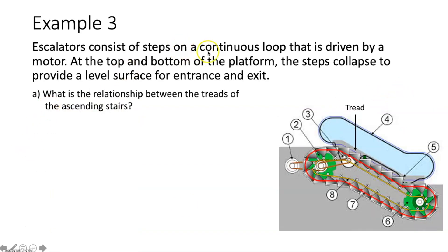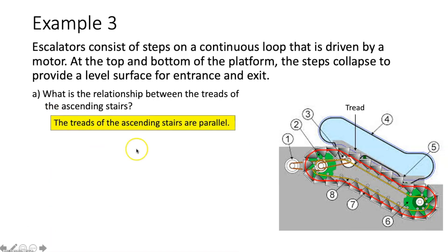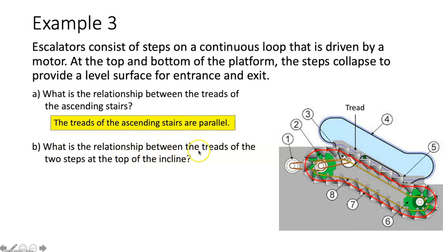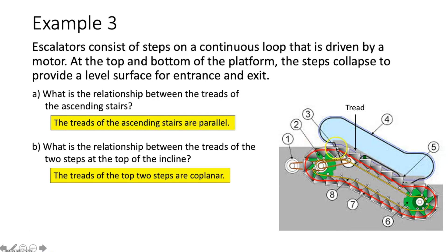Example three: escalators consist of steps on a continuous loop driven by a motor. Part A — the relationship between the treads of the ascending stairs: thinking of them as planes, if continued forever they would never intersect, so the treads of the ascending stairs are parallel planes. Part B — the relationship between the two steps at the top of the incline: they line up perfectly and connect with one another, therefore they are coplanar — they exist on the same plane.